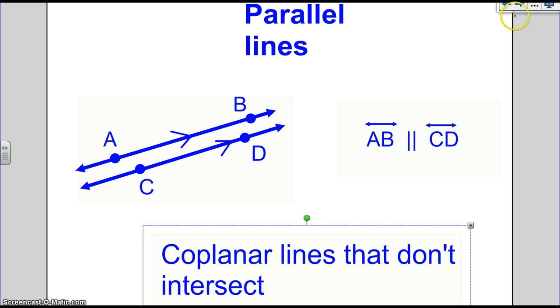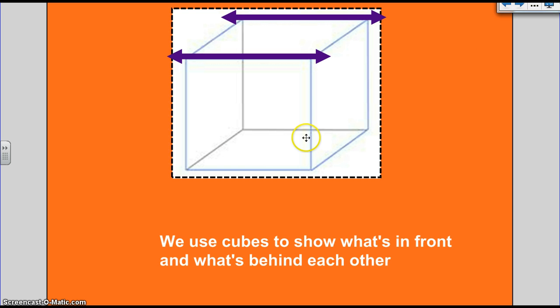Coplanar lines that don't intersect. Okay, we use cubes to show what's in front and what's behind each other. So you'll notice that this line is behind this line but on the same plane. So this is coplanar.